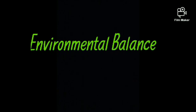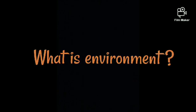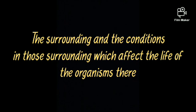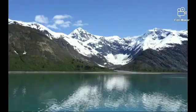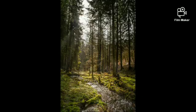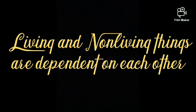Today we will discuss environmental balance. What is environment? The surroundings and the conditions in those surroundings which affect the life of the organisms there are together known as their environment. It includes many components such as sunlight, air, water, soil, plants and animals. Living and non-living things are dependent on each other.